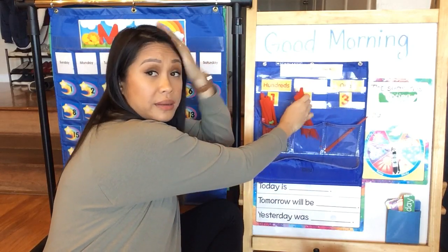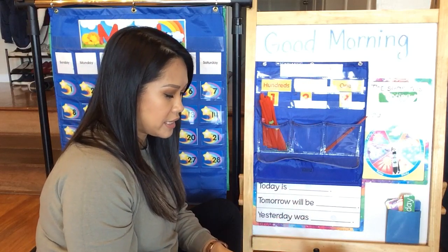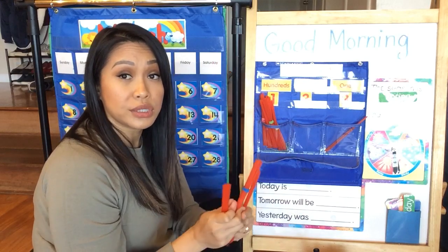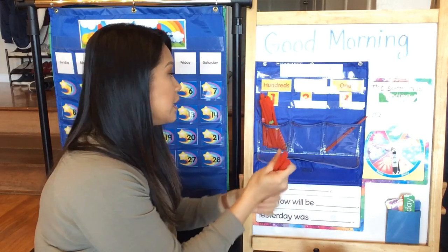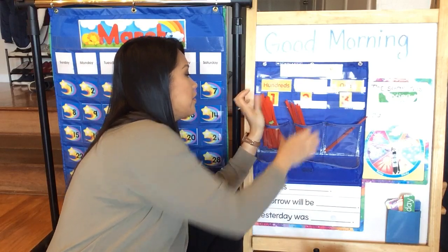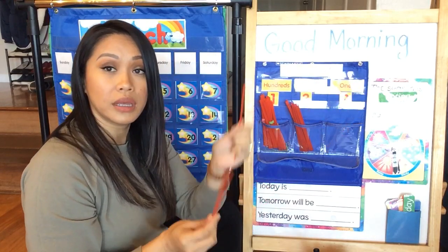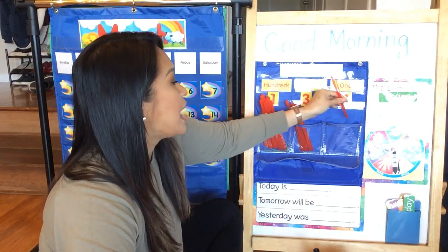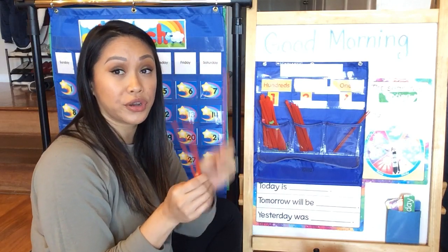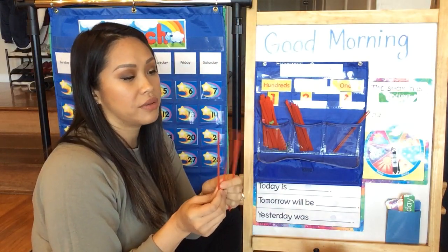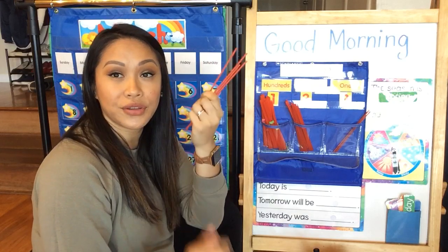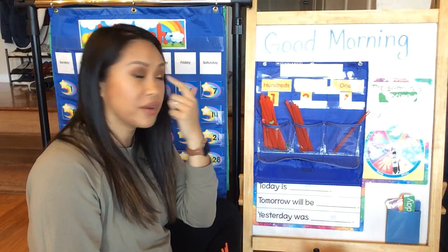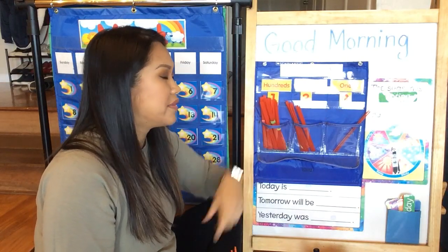Counting on from a hundred. Ready? Hundred ten. Hundred twenty. Hundred thirty. Counting on from a hundred thirty: hundred thirty-one, hundred thirty-two, hundred thirty-three. And we have to add our four: hundred thirty-four, hundred thirty-five, hundred thirty-six, hundred thirty-seven. Awesome. So we've been growing our brains in kindergarten for a hundred and thirty-seven days.